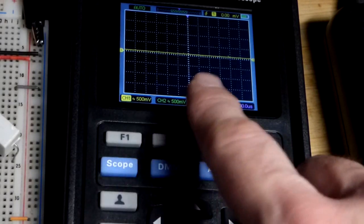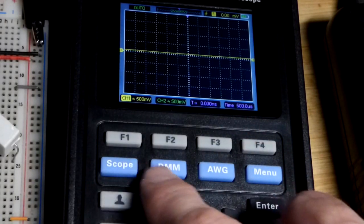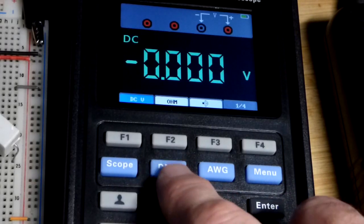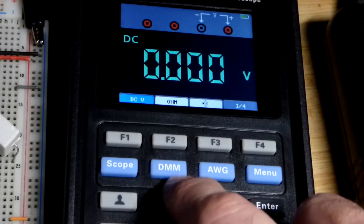Scope is what it will be set on the first time you turn it on. At least that's the way it was for me. To get the multimeter settings we got to hit the DMM.